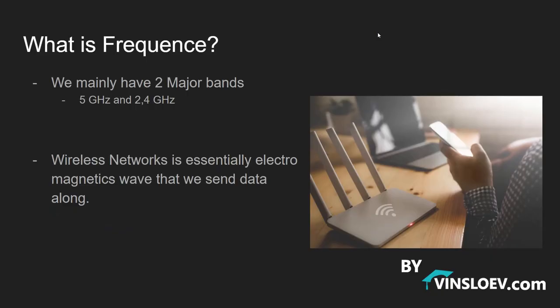Let's start off. What is frequency? Well, a frequency is basically an electromagnetic wave that we use to send data along. And in frequency we have two different major bands that we use. We have the 5 GHz and the 2.4 GHz, which is the most common when we are discussing wireless networks.